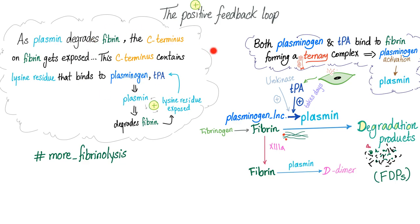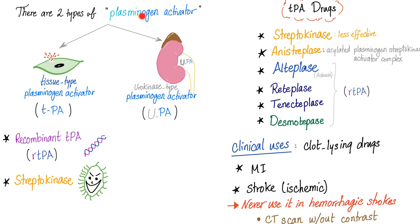Remember the positive feedback loop from the previous video. Both plasminogen and TPA bind fibrin to form a ternary complex — meaning three parts — which helps plasminogen activation and the formation of plasmin. There are two types of plasminogen activators: TPA and UPA.